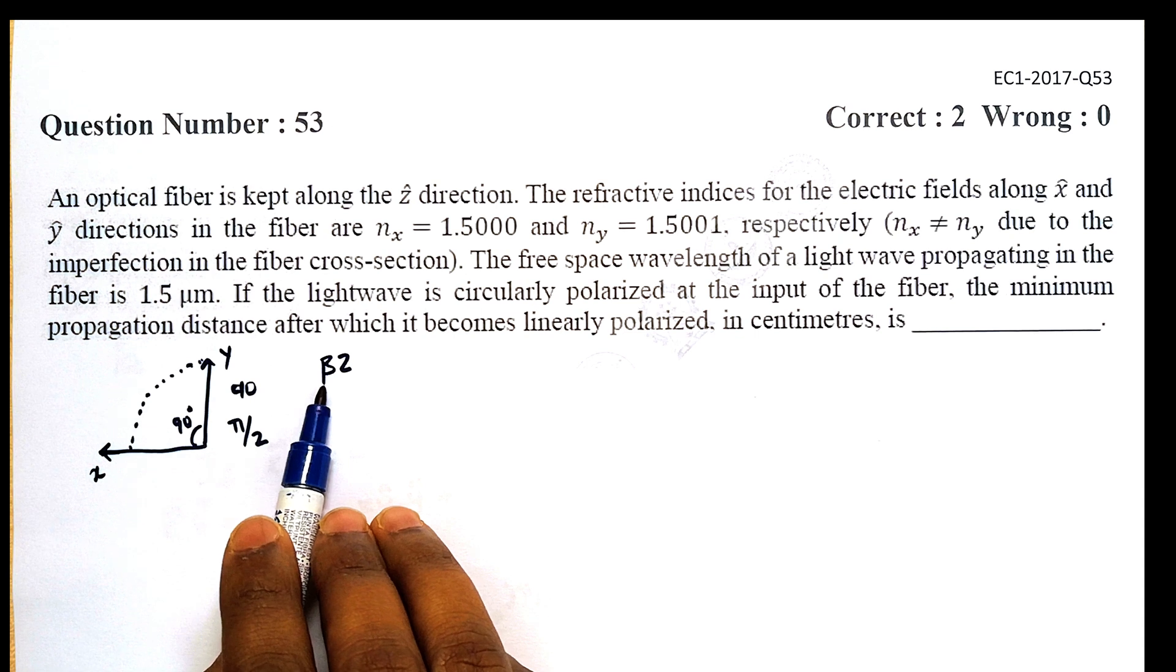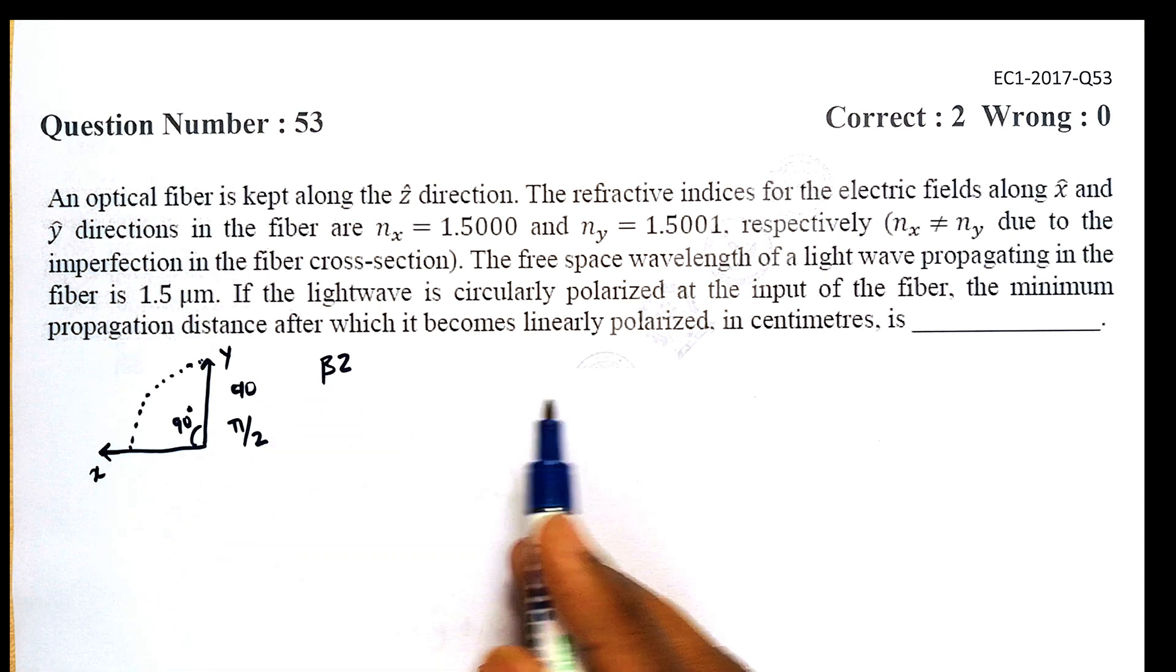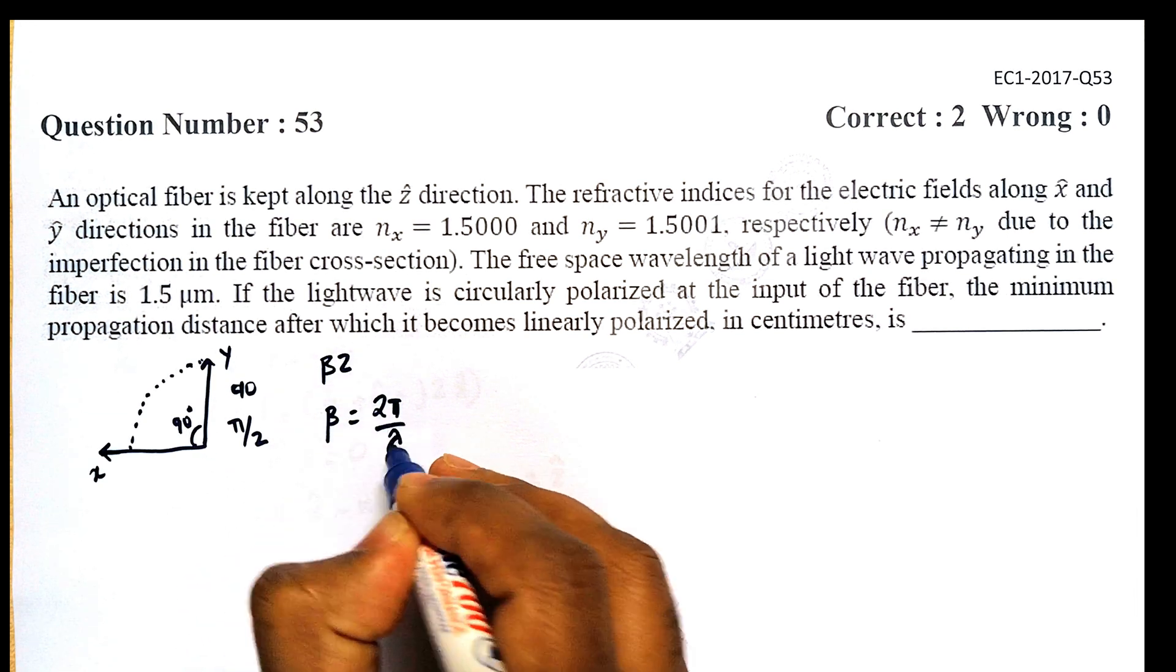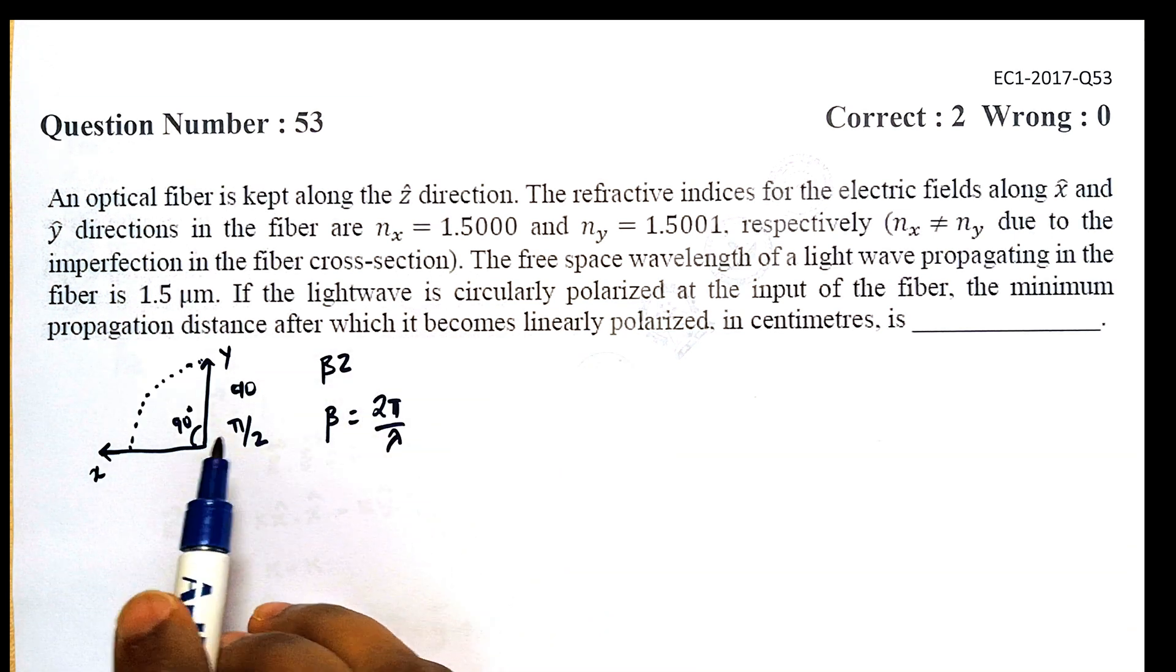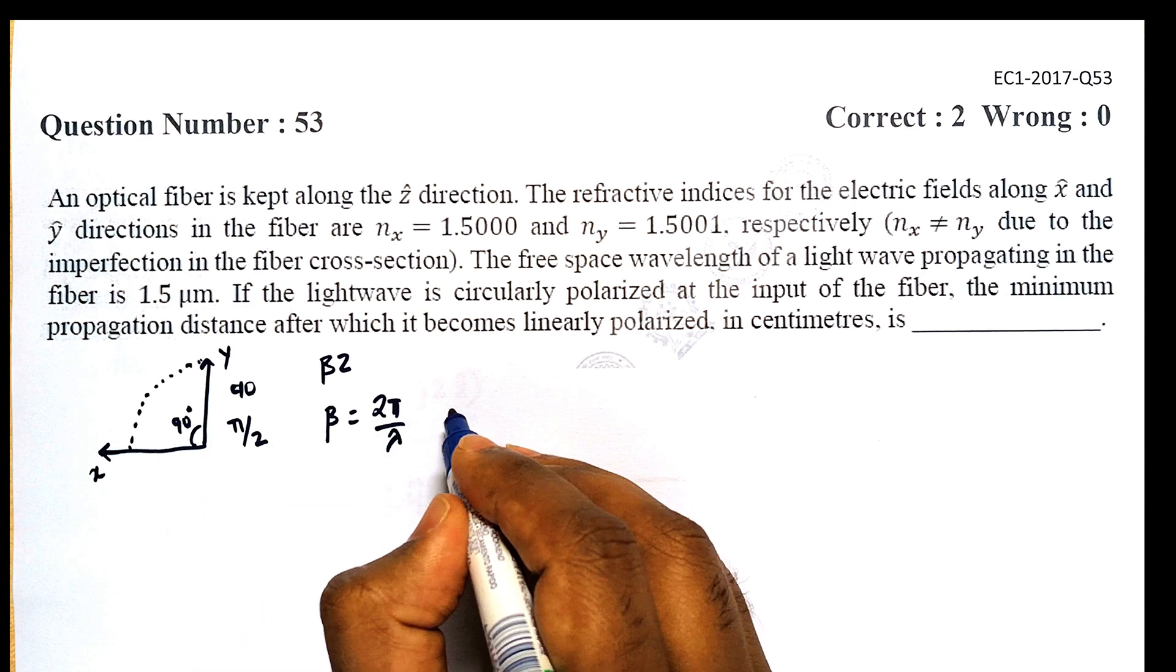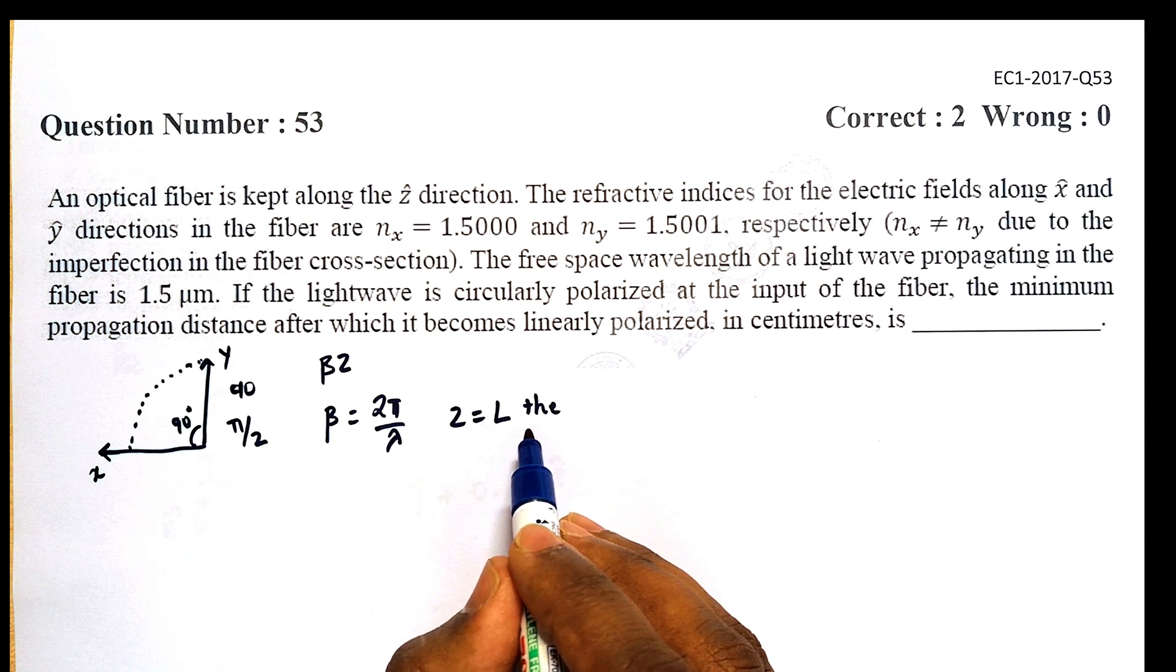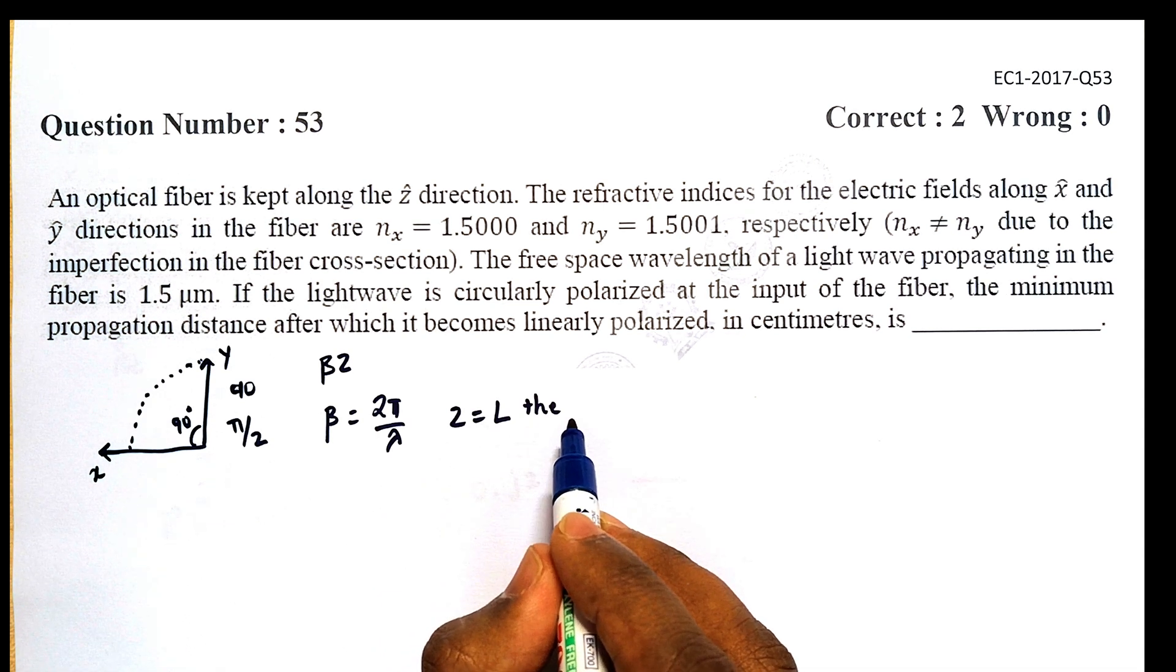So the propagation constant β is given by β = 2π/λ, and Z is the distance over which it travels. So in this case, let's say at a distance of L, that is at a distance of Z = L, there is a change in the phase by π/2.